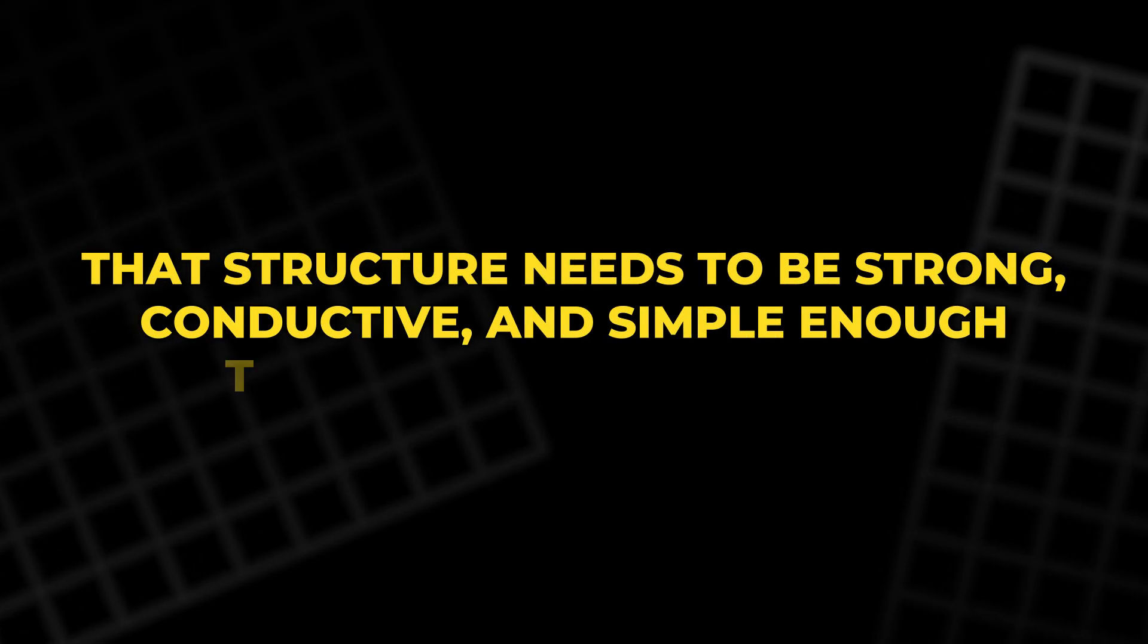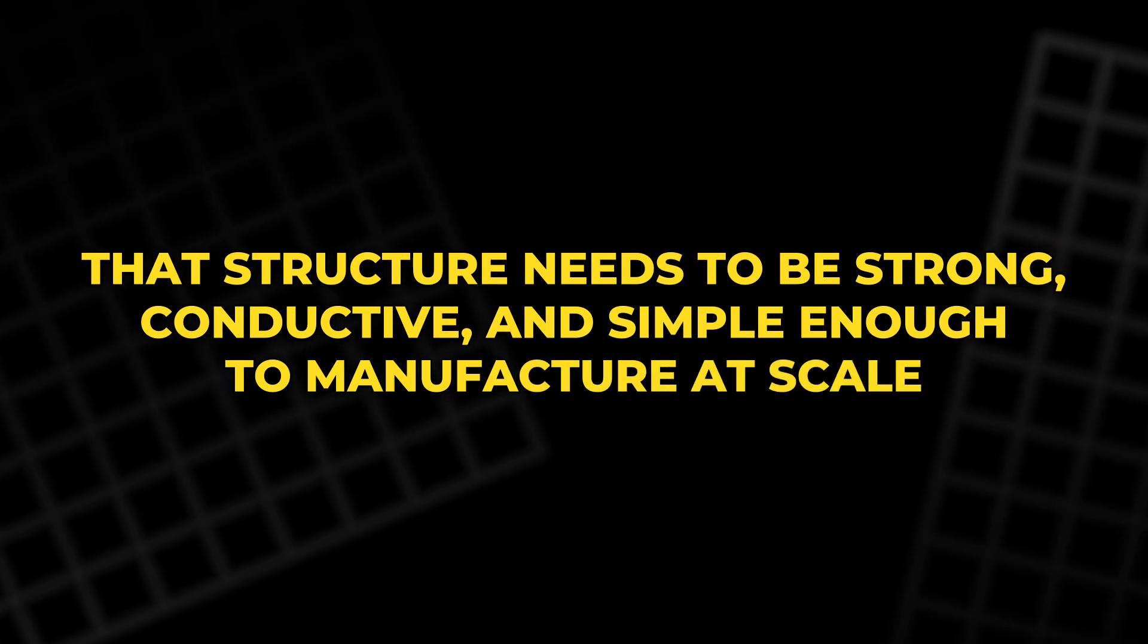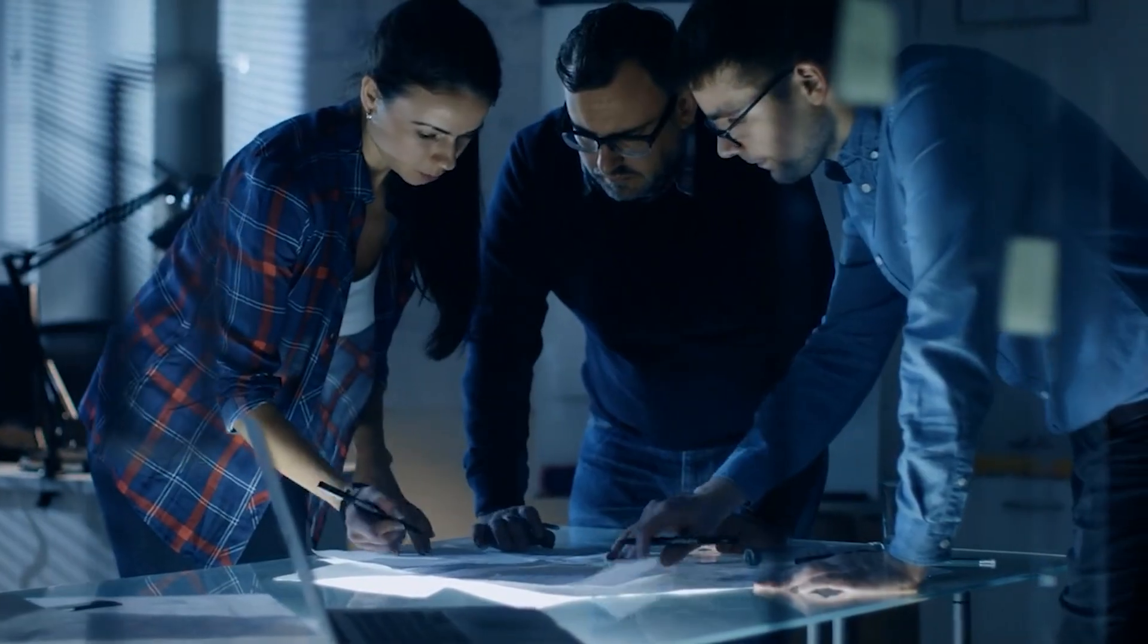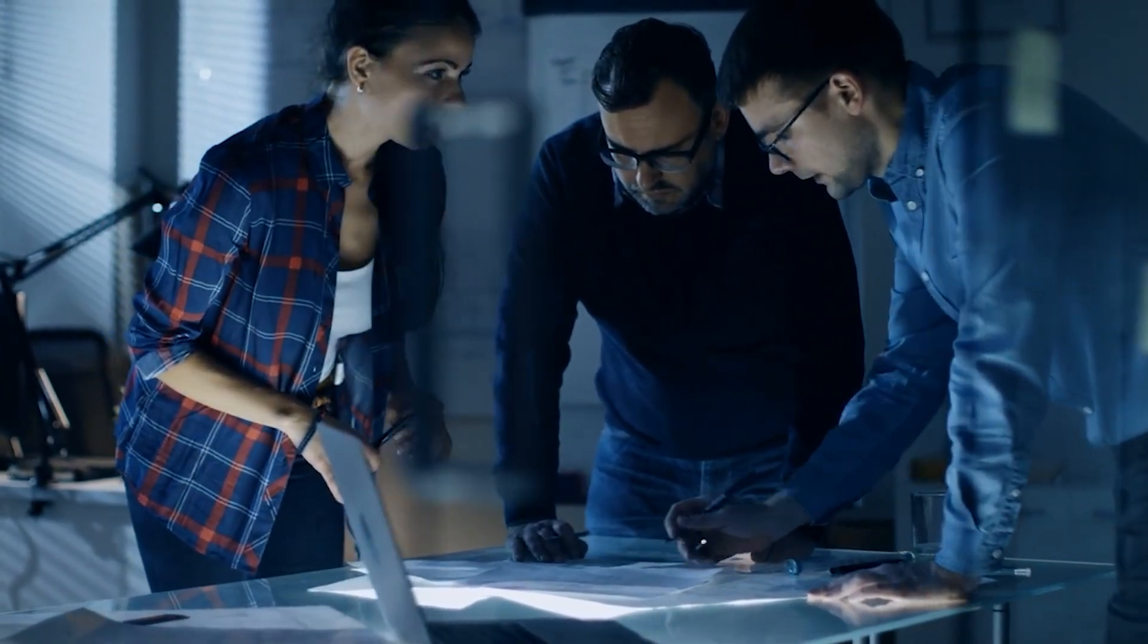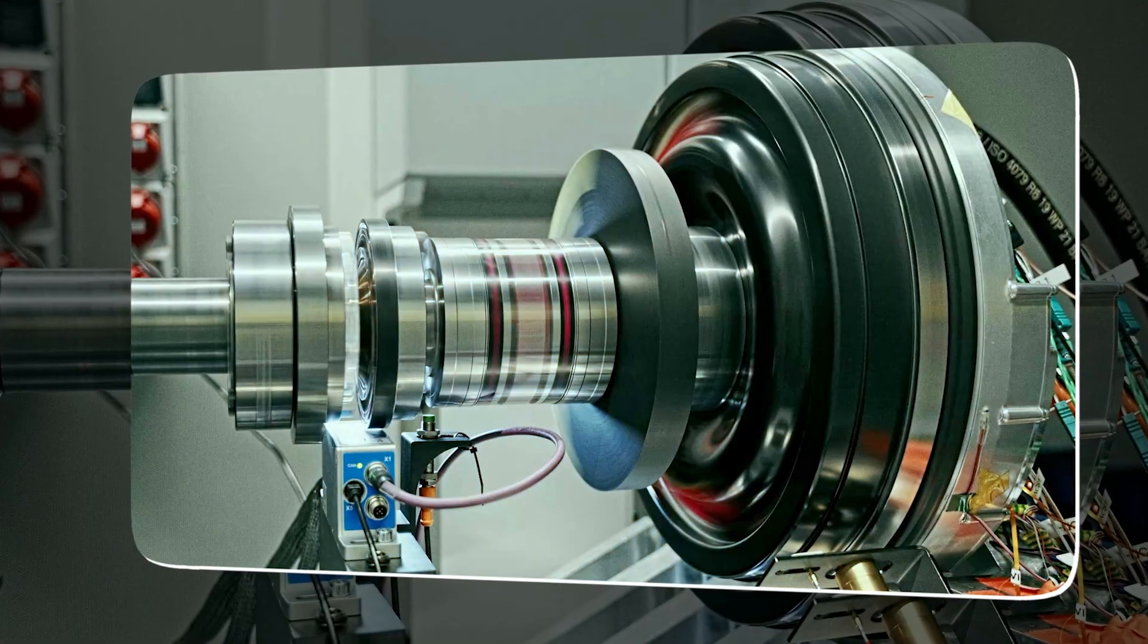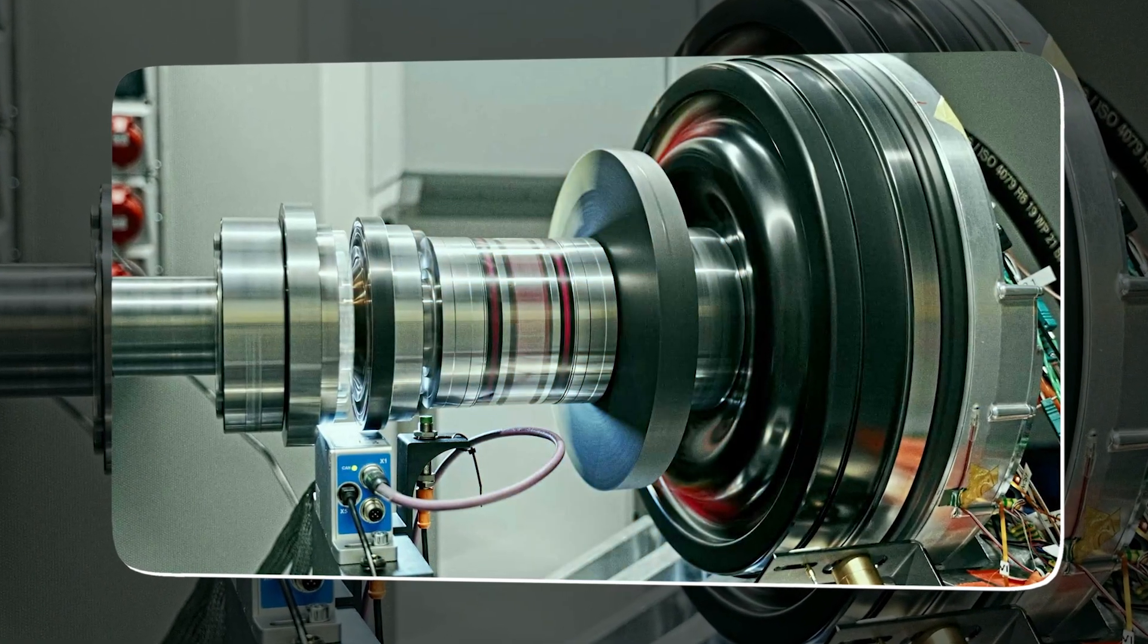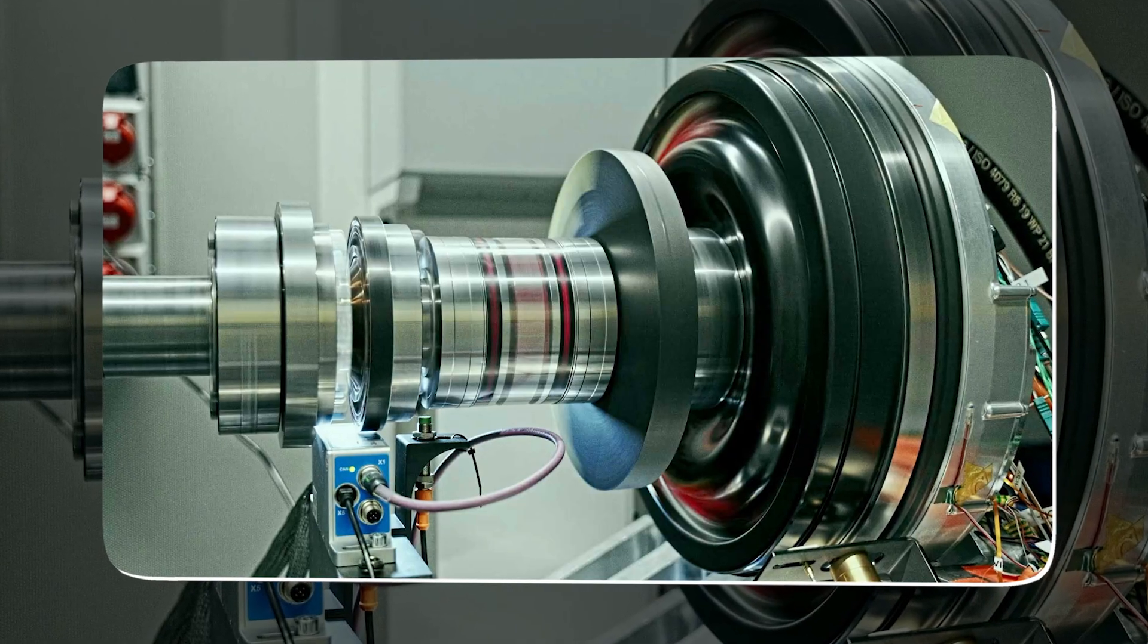That structure needs to be strong, conductive, and simple enough to manufacture at scale. Many attempts at yokeless designs failed because engineers could not solve these issues without creating new problems. DeepDrive spent years developing a winding system that could take on the yoke's job while also performing its normal electrical function.